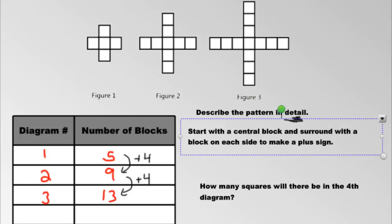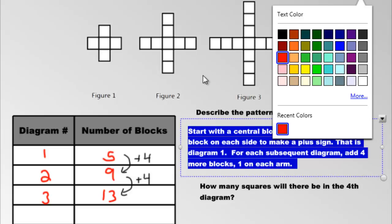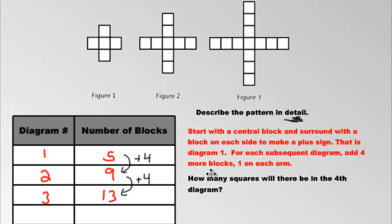That is diagram one. For each subsequent diagram, it's a lot of work writing this out, yeah no kidding, we're writing all these sentences out. For each subsequent diagram add four more blocks, one on each arm. That is the pattern. Let's make it red so it stands out and we're done. Now you can write this in your own way, this is just my way of explaining it. You may have a better way, maybe a more clearer way, that is fine.